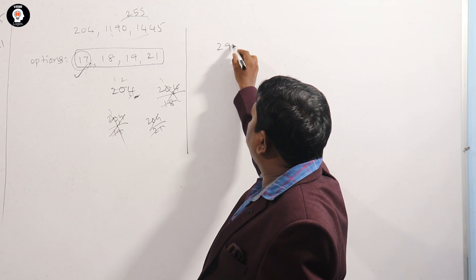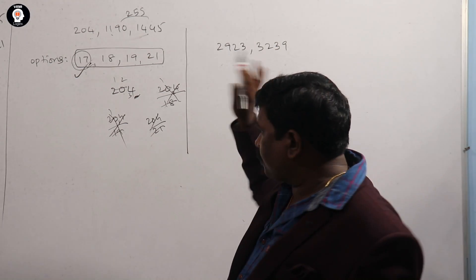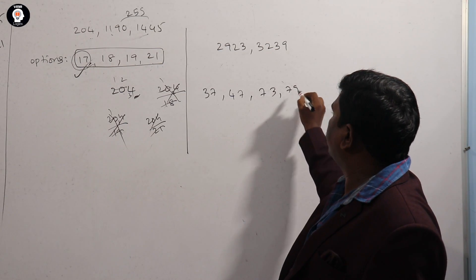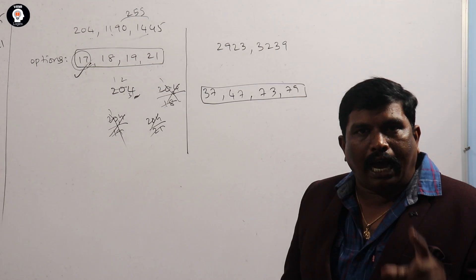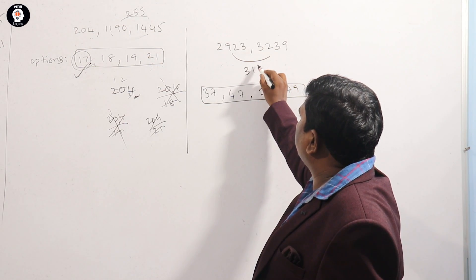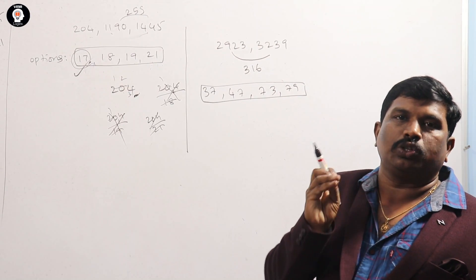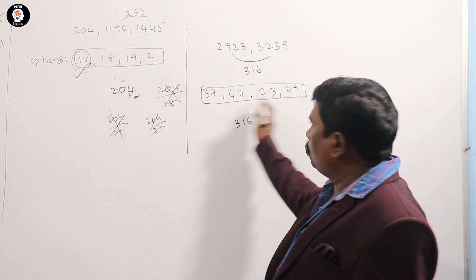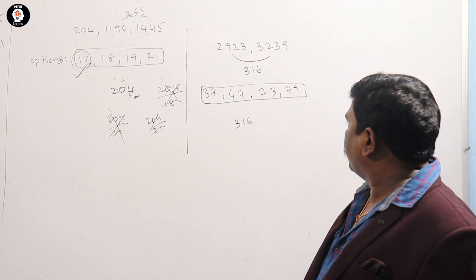For example: 2923 and 3239. Find the GCD. Options are 37, 47, 73, 79. GCD is the minimum difference. Difference is 316. The minimum difference is 316. Checking: 316 — if that's the option, 361 is not. So check 316 factors.